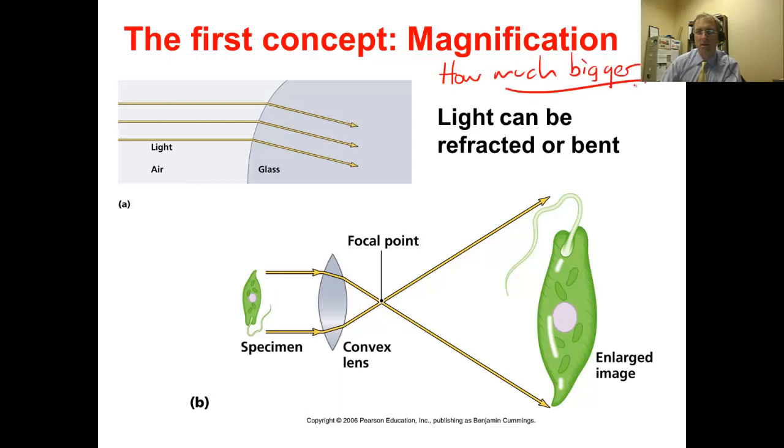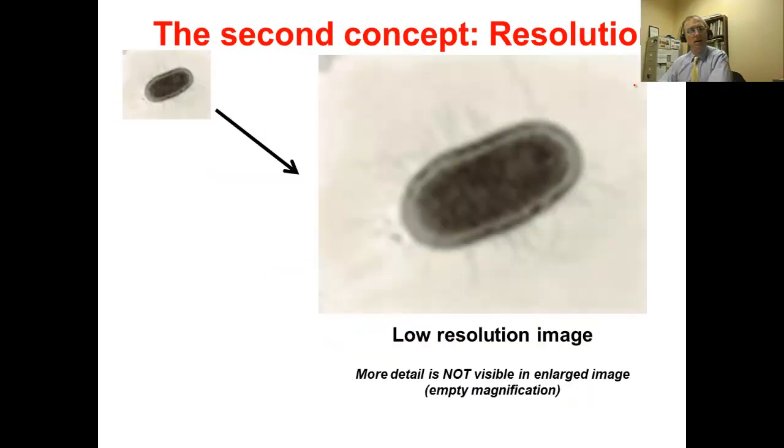The second concept is resolution, and it probably intrinsically feels kind of the same as magnification. However, with the compound light microscope, we run into a problem if we magnify things sufficiently large enough. This appears at about the time when we magnify something smaller than the limit of resolution we spoke about already at 200 nanometers in diameter.